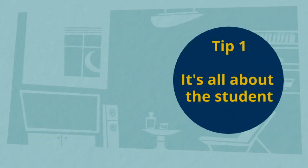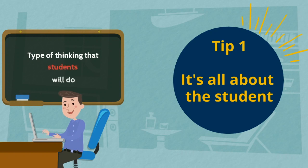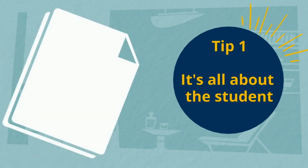Tip number one: it's all about the student. In their most basic form, learning outcomes describe the type of thinking that students will do, not what the teacher will do. Start your learning objectives with the phrase 'the students will' to help you get into the right frame of mind.